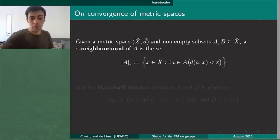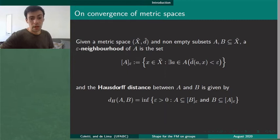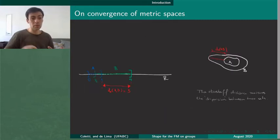We will consider the Hausdorff distance between two sets in a metric space. We can consider that the Hausdorff distance gives us information about the dispersion between two sets and it is very useful to describe the type of convergence we are interested in.